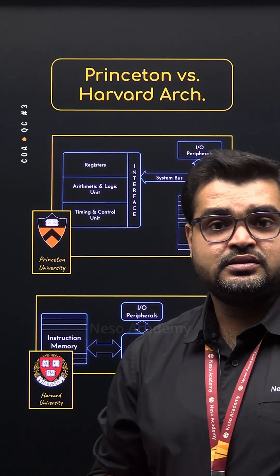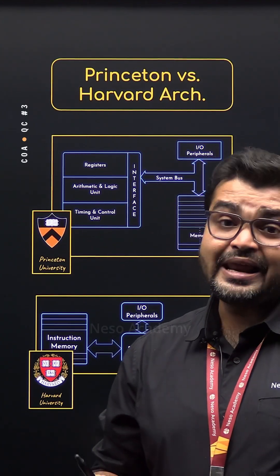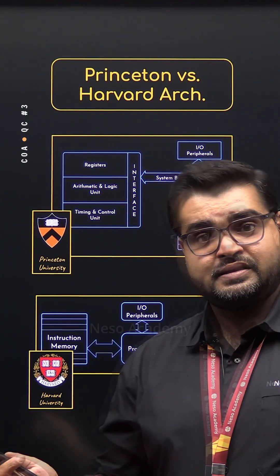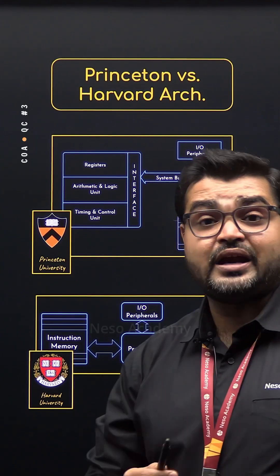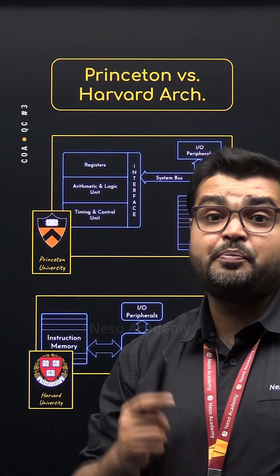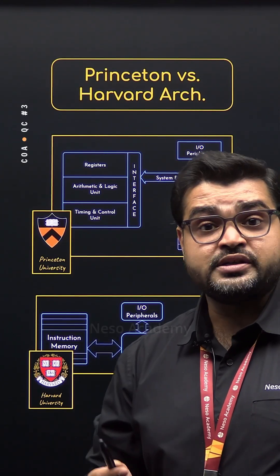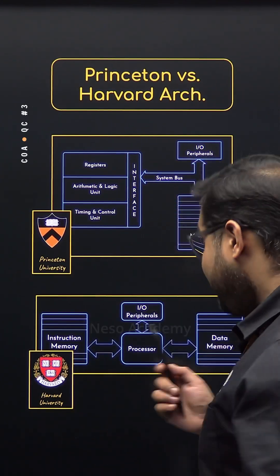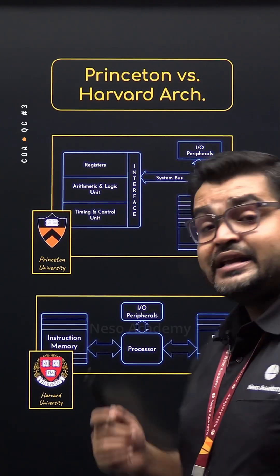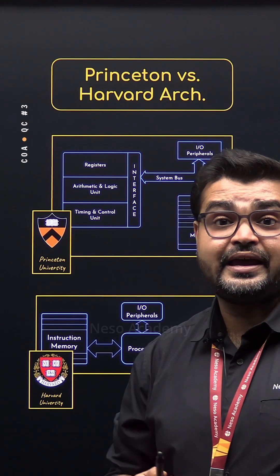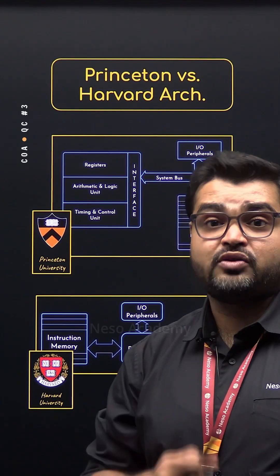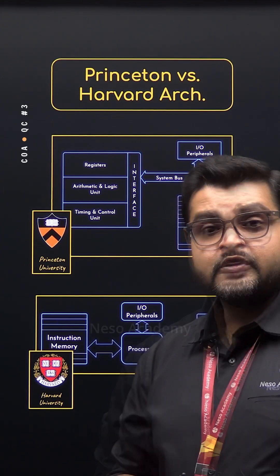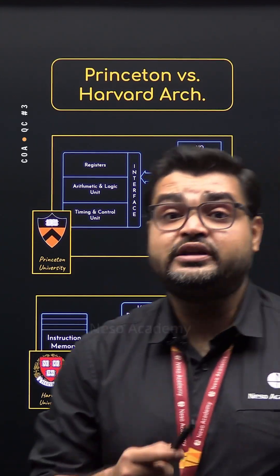So which one is better? Well, it depends. Princeton architecture is great for general purpose computers, whereas Harvard architecture dominates in embedded systems and microcontrollers. So now you know the difference.